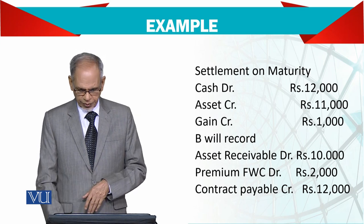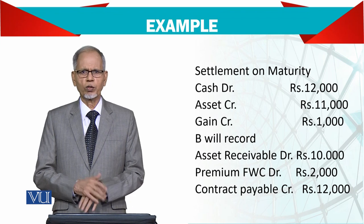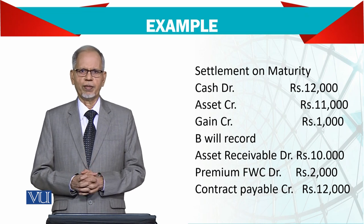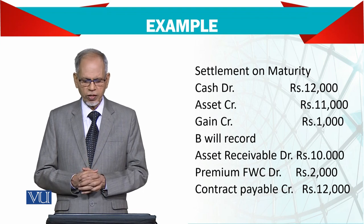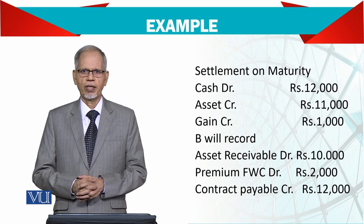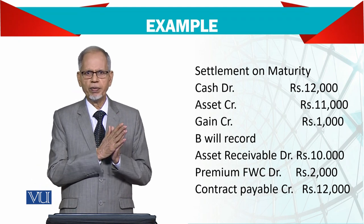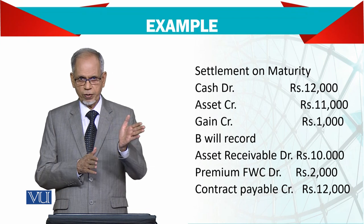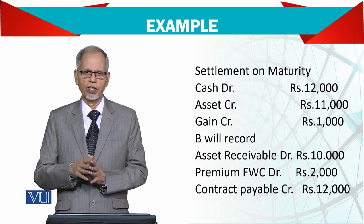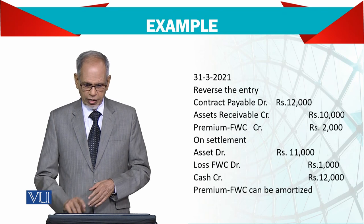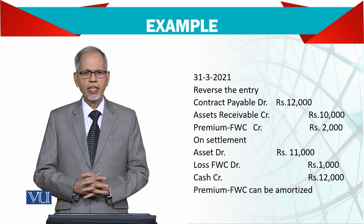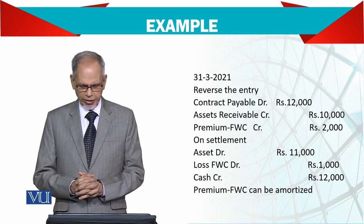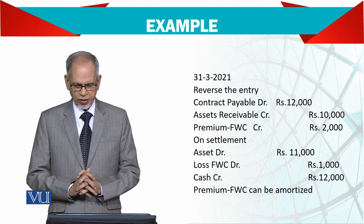B क्या करेगा — B एक asset खरीदने जा रहा है, तो वो asset को debit करेगा और contract payable को credit करेगा। Differential यानी premium का भी हिसाब होगा — जहाँ receivable debit था seller के लिए, वहाँ buyer के लिए payable credit होगा। Contract payable debit होगा और premium credit होगा 2,000।